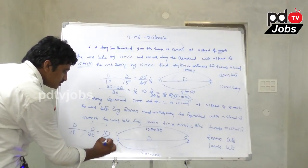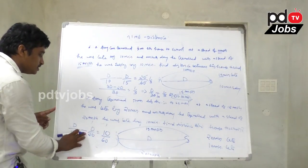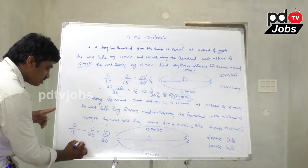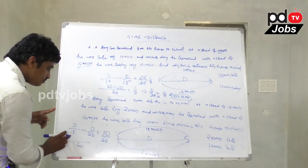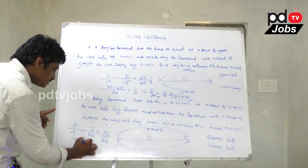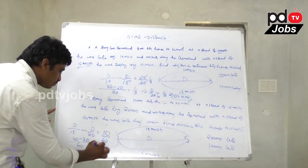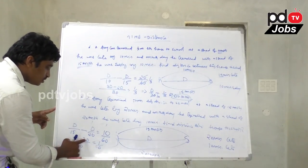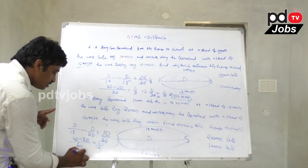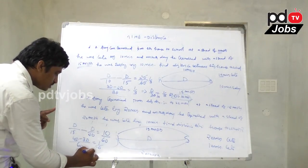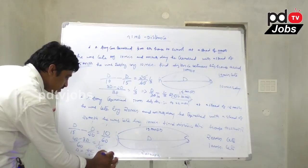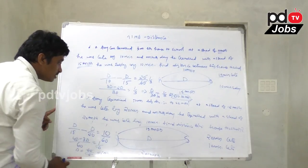The time difference is 10 minutes, which is 10/60 hours. Setting up: D/15 minus D/20 equals 10/60. The LCM of 15 and 20 is 60. So 4D minus 3D over 60 equals 1/6. D equals 10 km.